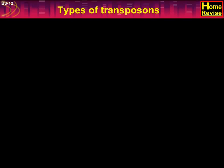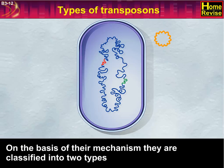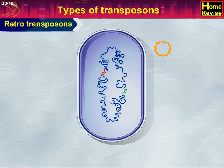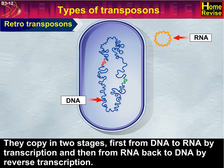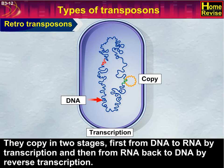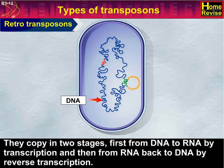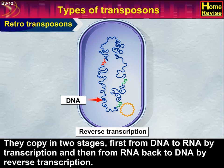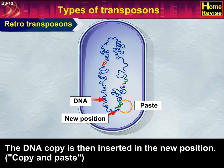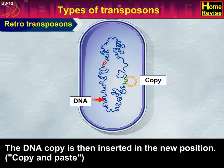Types of transposons: on the basis of their mechanisms, they are classified into two types. Retrotransposons copy in two stages — first from DNA to RNA by transcription, and then from RNA back to DNA by reverse transcription. The DNA copy is then inserted in the new position. So it is copy and paste.